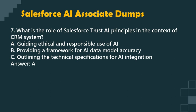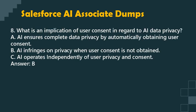Question 8: What is an implication of user consent in regard to AI data privacy? a. AI ensures complete data privacy by automatically obtaining user consent. b. AI infringes on privacy when user consent is not obtained. c. AI operates independently of user privacy and consent. Answer: B.